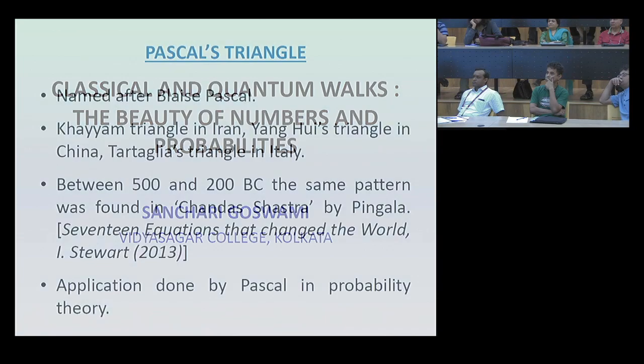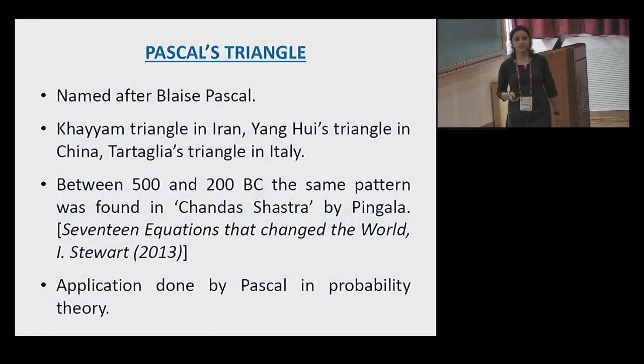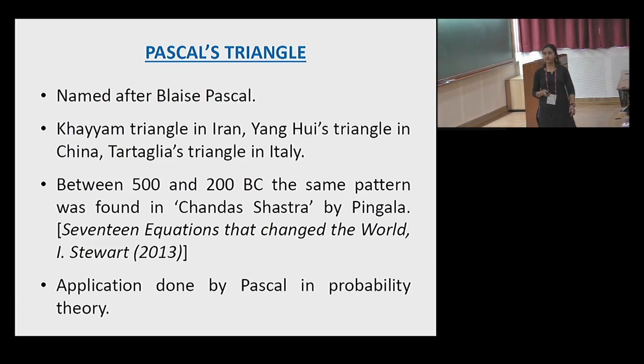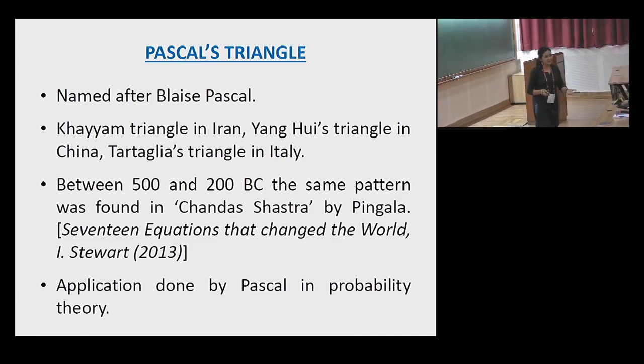So I begin with Pascal's triangle, which is a very well-known thing named after Blaise Pascal. But before that, this pattern was known in Iran, China and Italy with some other name. In between 500 and 200 BC, the same pattern was found by Pingala in Chandashastra. I'm not going to claim that everything was there, but it was there. The application in probability theory started with Pascal.